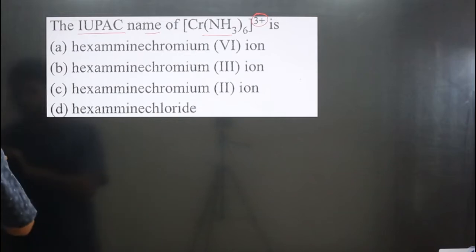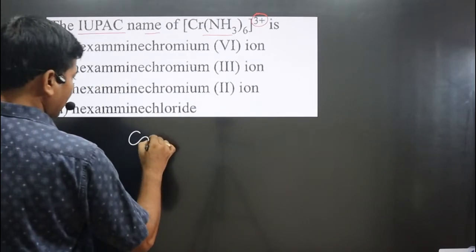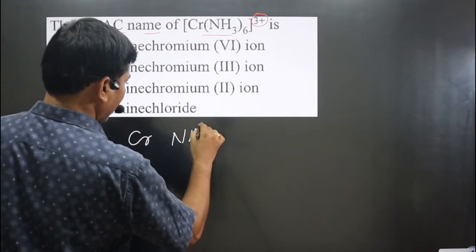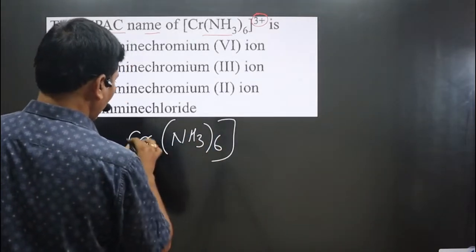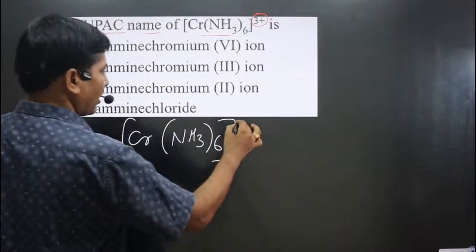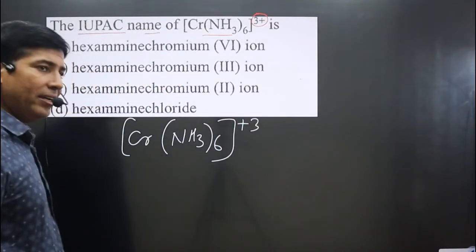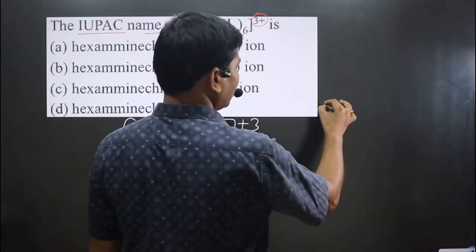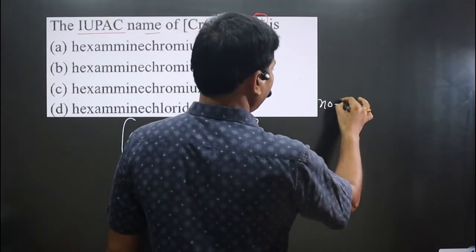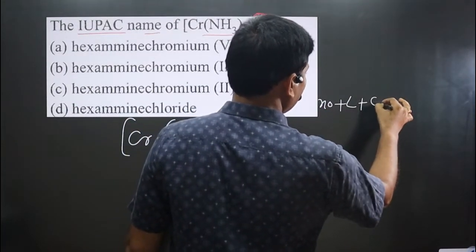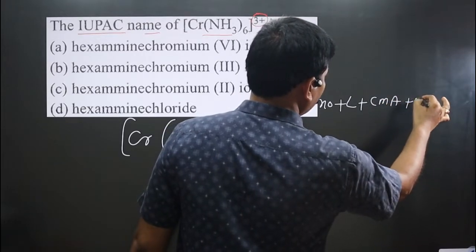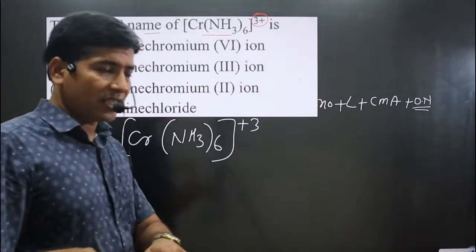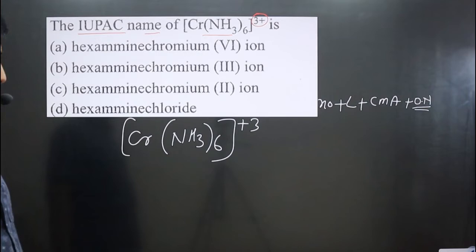Let me write the complex. First we have chromium (Cr), then a neutral ligand, and the whole 6 is there. The overall charge for the complex is plus 3. The order to name the complex is: number of ligands, then type of ligand, then the central metal atom, then the oxidation number of the central metal atom written in Roman numerals.